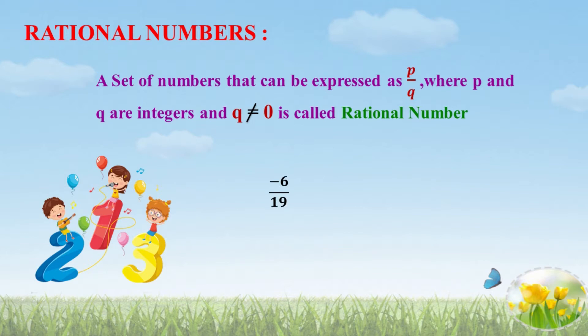The first example is minus 6 by 19. Here, the numerator is negative and the denominator is a positive number. P and Q are integers, so they can take negative as well as positive numbers. Therefore, the given number is a Rational Number. It satisfies the condition Q is not equal to 0, and here the denominator is not 0. Therefore, it is a Rational Number.